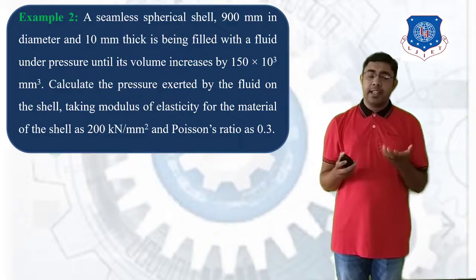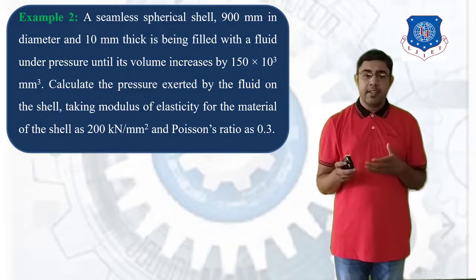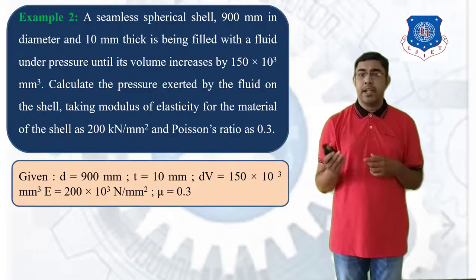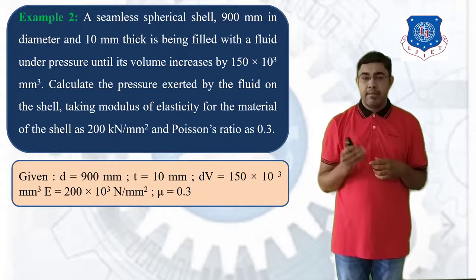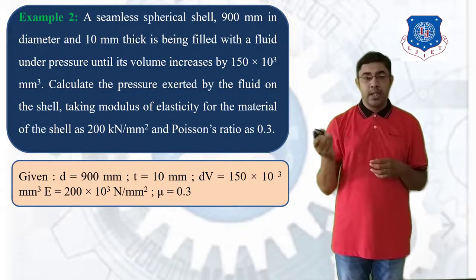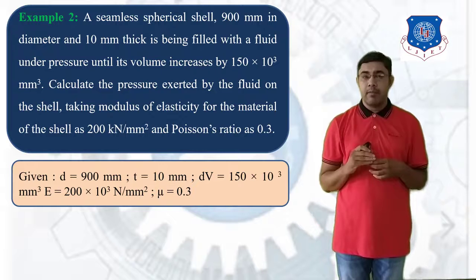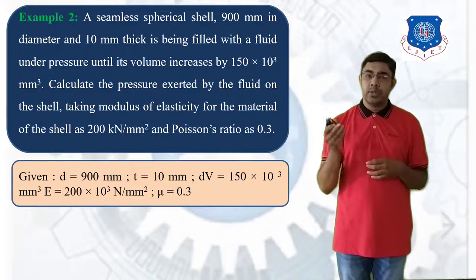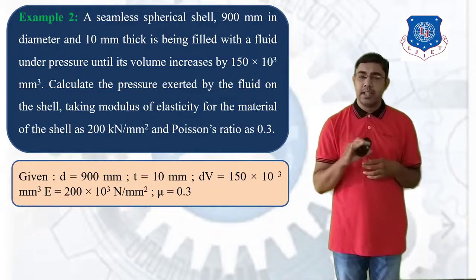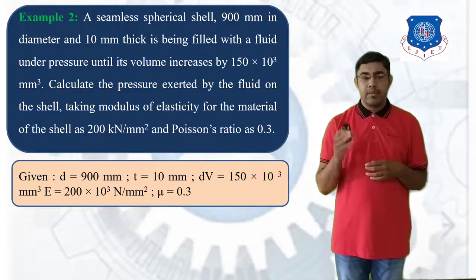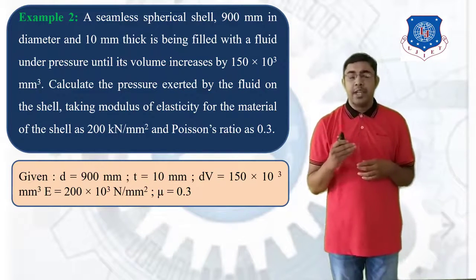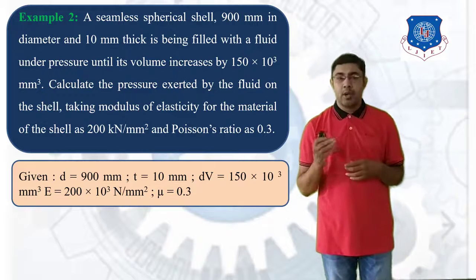First, we collect the data: D = 900 mm, T = 10 mm, delta V = 150 × 10³ mm³, E = 200 × 10³ N/mm², and Poisson's ratio nu = 0.3.